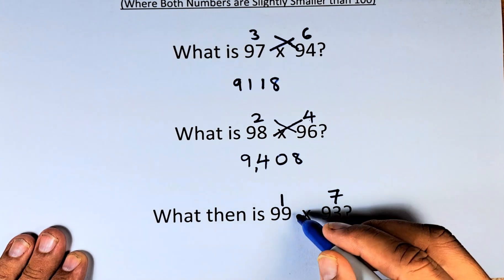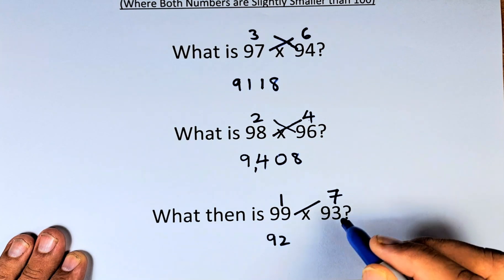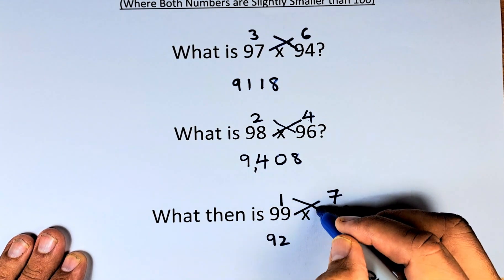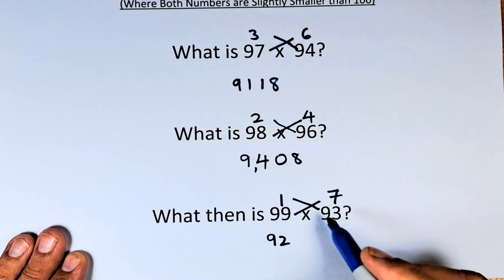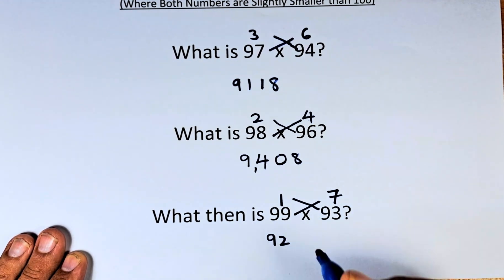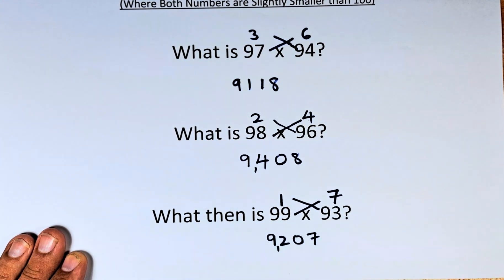Next step, we take 99 minus 7, which is 92. Or alternatively, 93 minus 1 is also 92. And last but not least, we multiply 1 by 7. Instead of writing 7, you write 07. So the answer when 99 is multiplied by 93 is 9,207.